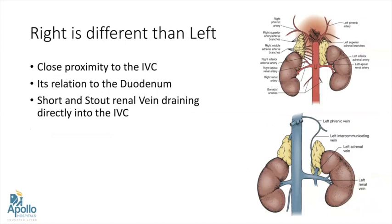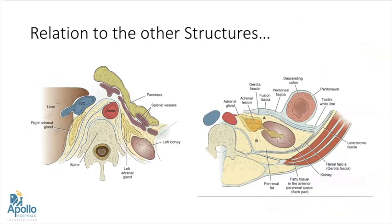There is a subtle difference between right and left side because of its close proximity to the IVC, its relation to the duodenum, and the right adrenal vein is short and stout and directly drains into the IVC. When we compare the relation to the adjoining structures, the right adrenal when it grows usually grows underneath the IVC, it can push the liver and it can push the kidney downwards. So at times we have to mobilize the liver very aggressively.